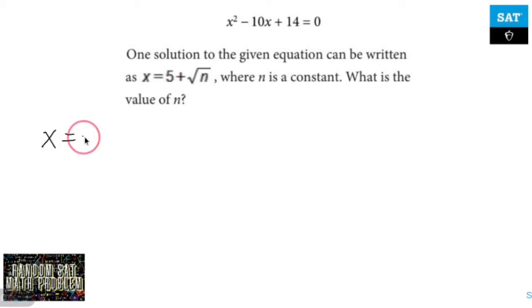X equals negative b plus or minus the square root of b squared minus 4ac, all over 2a.